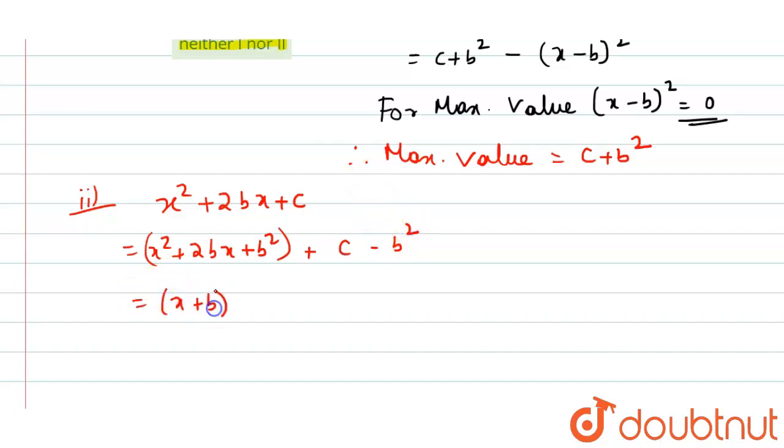So (x + b)² + c - b². We find the minimum value.